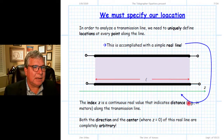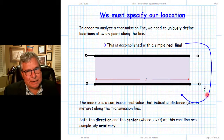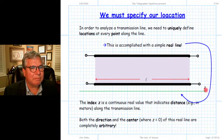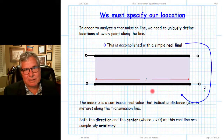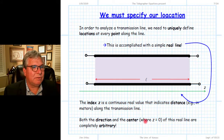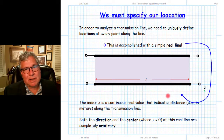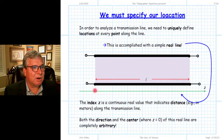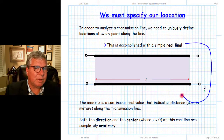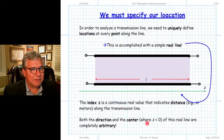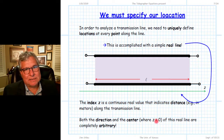Not only do we define the index z as increasing from left to right, we must also define the center of this real line — the location where z equals zero. Where z equals zero is up to us to assign, just as arbitrarily as we chose the direction of increasing z. We can arbitrarily locate the point on the line which we call z equals zero.